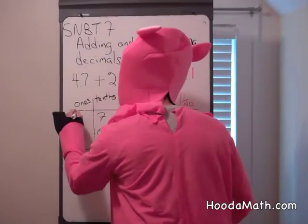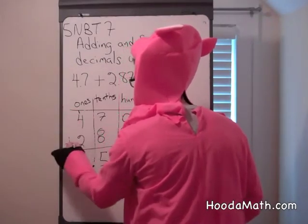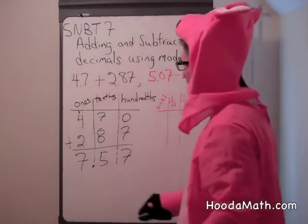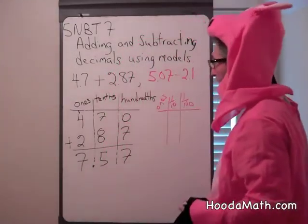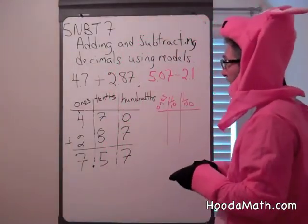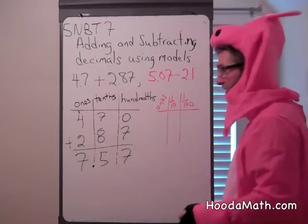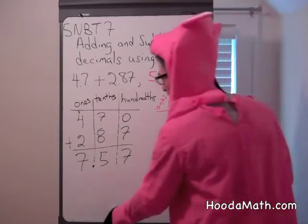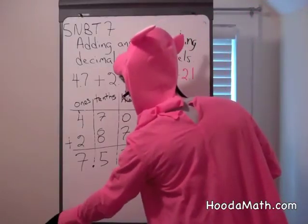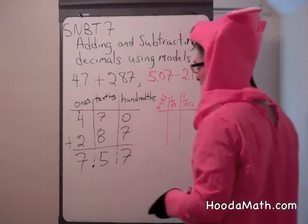Put a one here. One and four is five, and two is seven. Four and seven tenths plus two and eighty-seven hundredths gives us seven and fifty-seven hundredths.